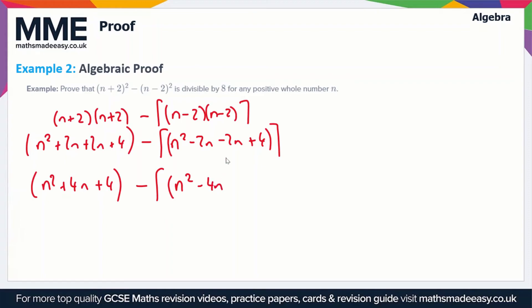Actually we can remove this set of brackets now, but this is where it becomes useful to have the brackets. So we've got n² + 4n + 4, and then we're subtracting: -n² gives us +n².